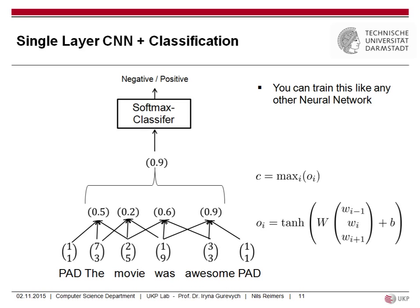In a complete network: you have your sentence, create a window around each target word, compute the activation, take the max — in this case 0.9 — then feed it into a softmax classifier to get a positive or negative output. You can train it like any other neural network using gradient descent and backpropagation, end to end.